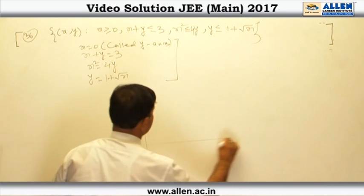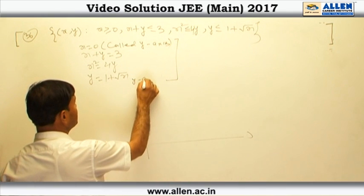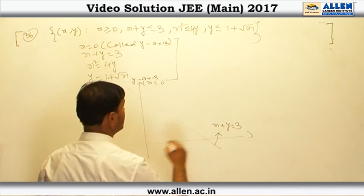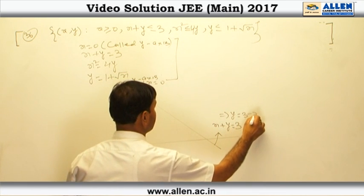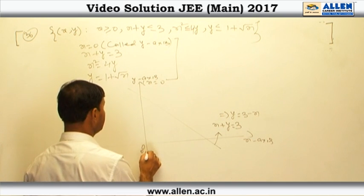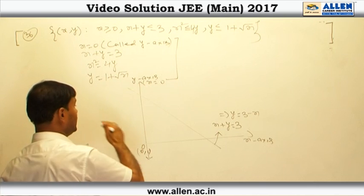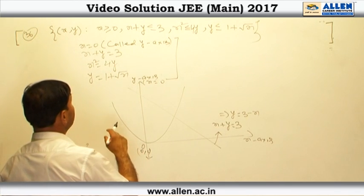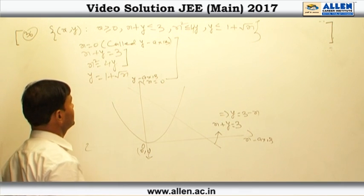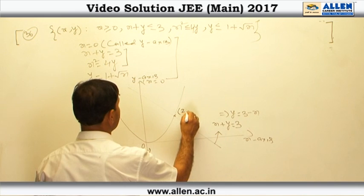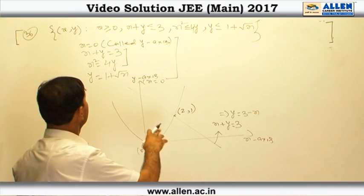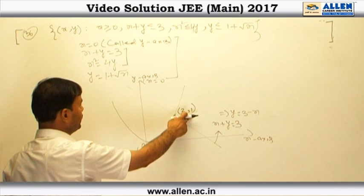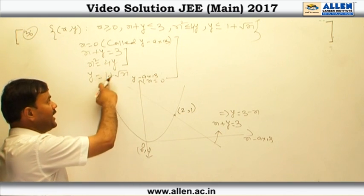We make the graph: this is the y-axis (x equal 0), this line is x plus y equal 3, from which y equal 3 minus x. This is the x-axis, and this point is the origin. The upward parabola has vertex at the origin. When we solve the parabola and the line simultaneously, we find their point of intersection at x equal 2 and y equal 1.